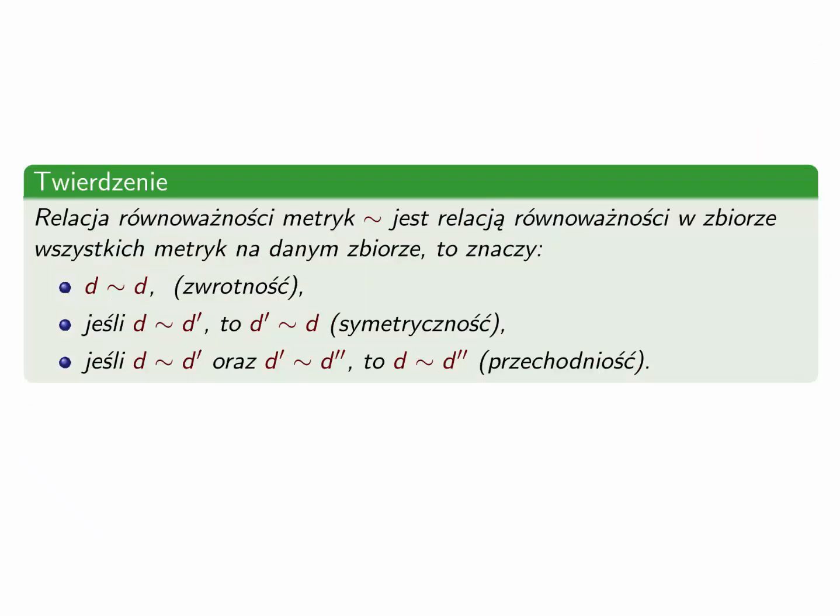Okazuje się, że relacja równoważności metryk, którą oznaczę falką, jest relacją równoważności w rodzinie wszystkich metryk na danym zbiorze. To znaczy, że spełnione są trzy warunki: po pierwsze, każda metryka jest równoważna z nią samą; po drugie, jeśli d jest równoważna d', to również d' jest równoważna d; po trzecie, jeśli d jest równoważna d' i d' jest równoważna d'', to d jest równoważna d''.